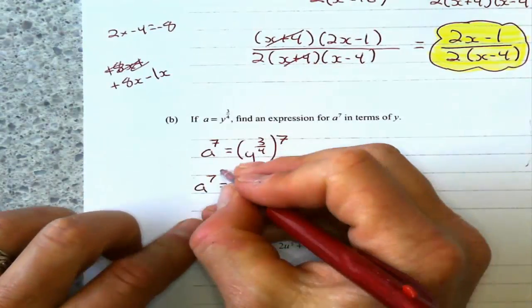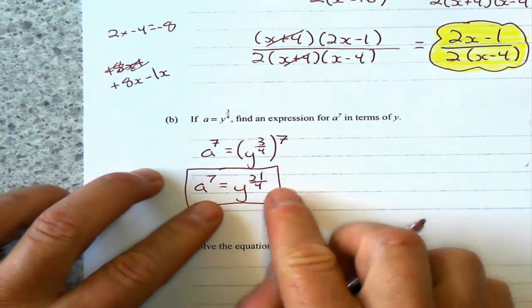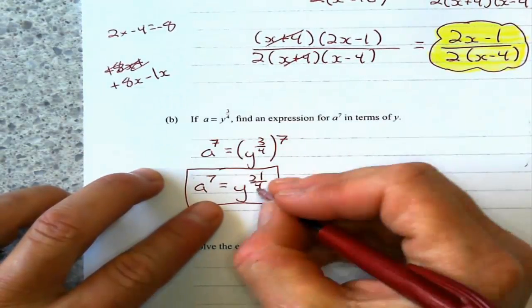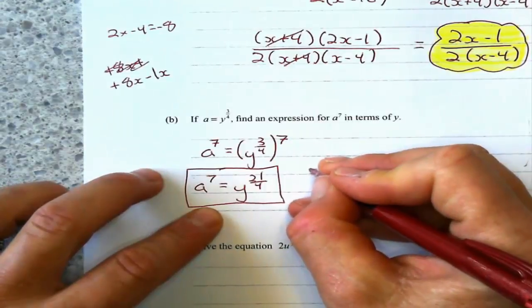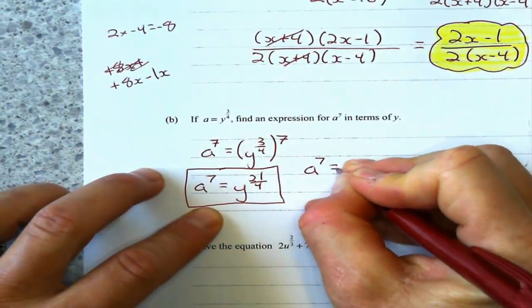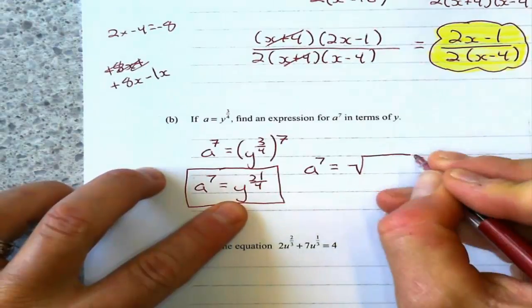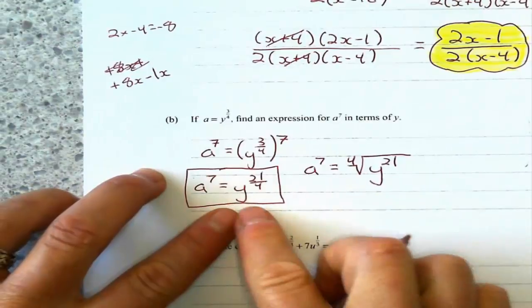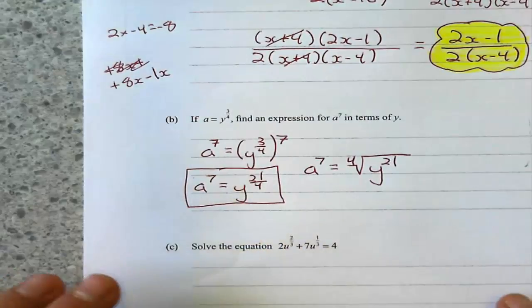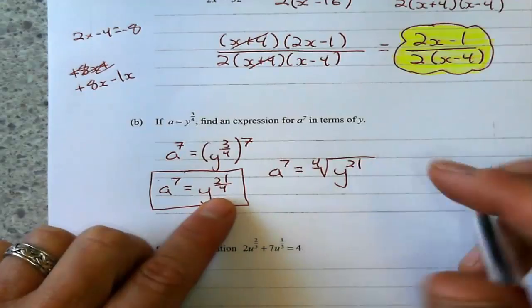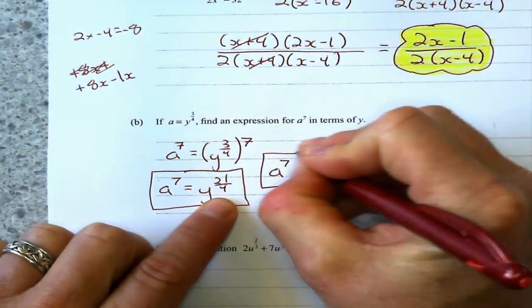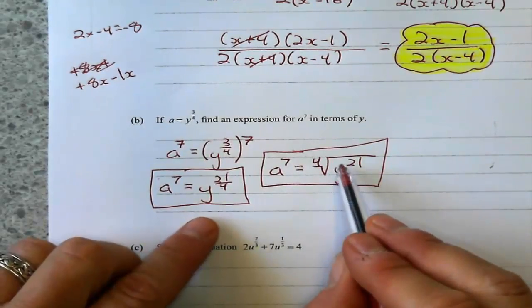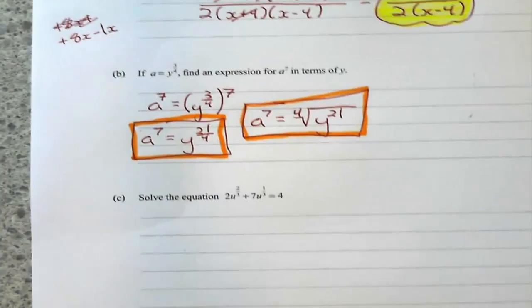I guess this is finished here. It didn't tell us what form they want us to write it in. If they want us to write it in radical form, I could say a to the 7th equals the 4th root of y to the 21st. Either one of these, I guess. I'll just take either one of these as the correct answer because it doesn't say which form they wanted, index form or radical form.